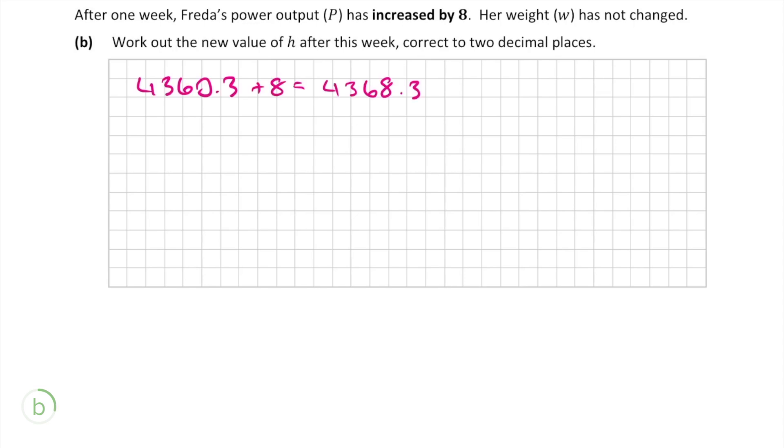Since her power output increased by 8, it is now 4368.3. Since her weight has not changed, we get this new equation with one unknown, which is h.